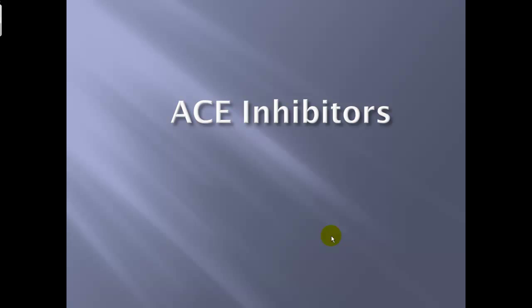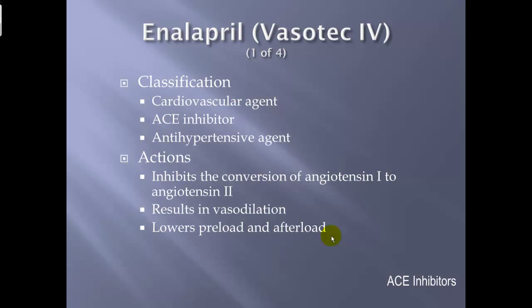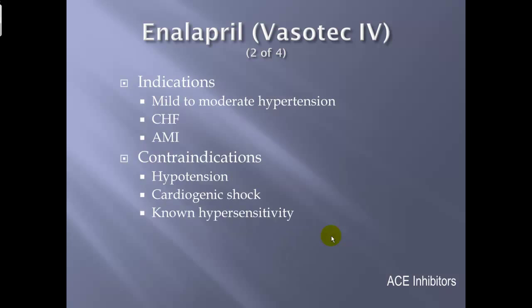ACE inhibitors. Enalapril, or Vasotec. Classification: cardiovascular agent, ACE inhibitor, antihypertensive agent. Actions: inhibit the conversion of angiotensin I to angiotensin II — which is a vasoconstrictor — through angiotensin-converting enzyme (ACE), resulting in vasodilation and lowering preload and afterload. Indications: mild to moderate hypertension, congestive heart failure, and acute myocardial infarction. Lisinopril (the oral form) is commonly used post-MI to decrease sudden cardiac death by reducing cardiac workload; Enalapril is the IV form.